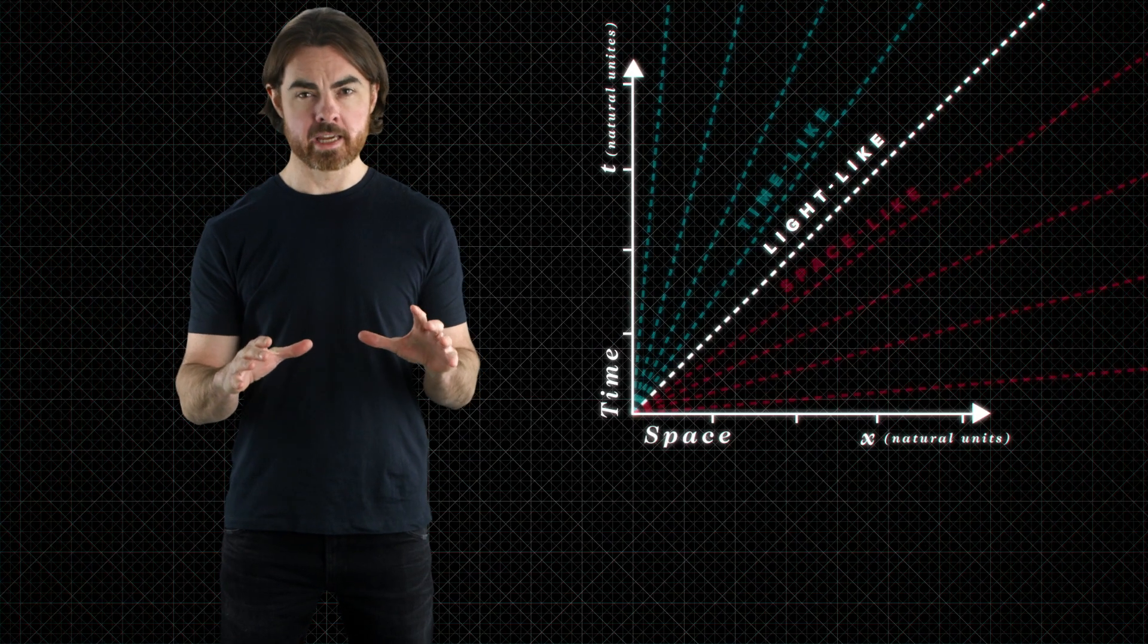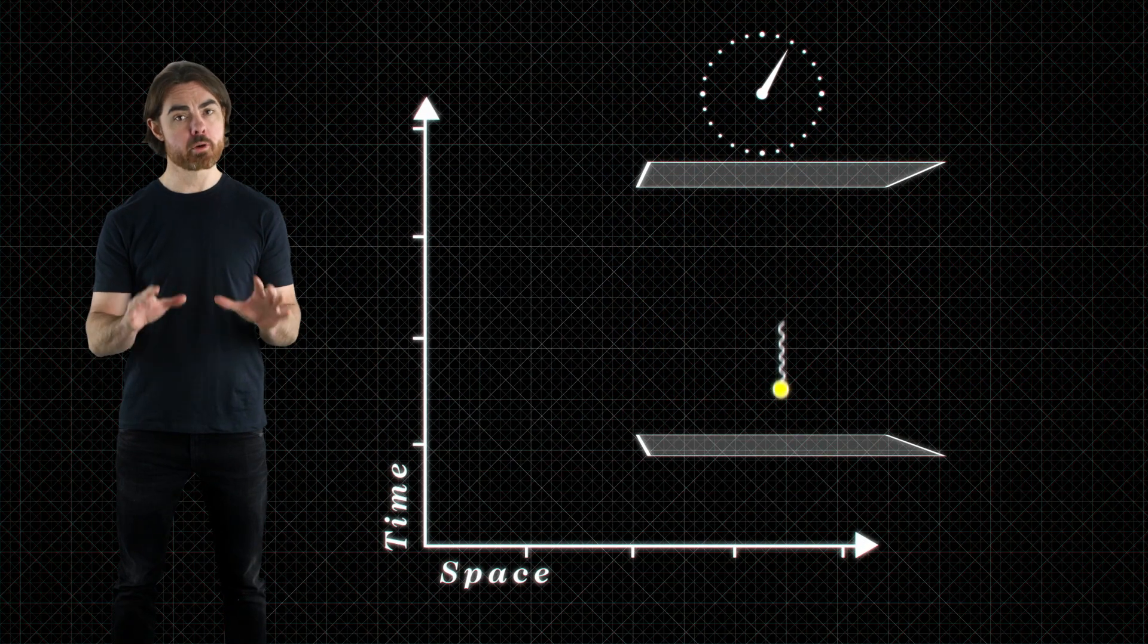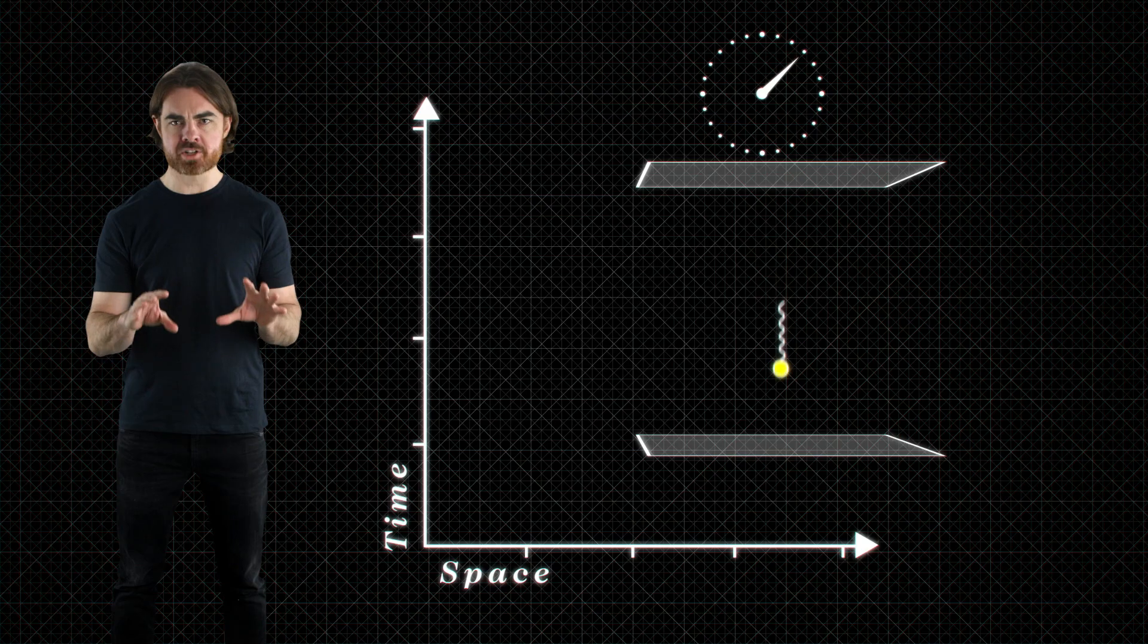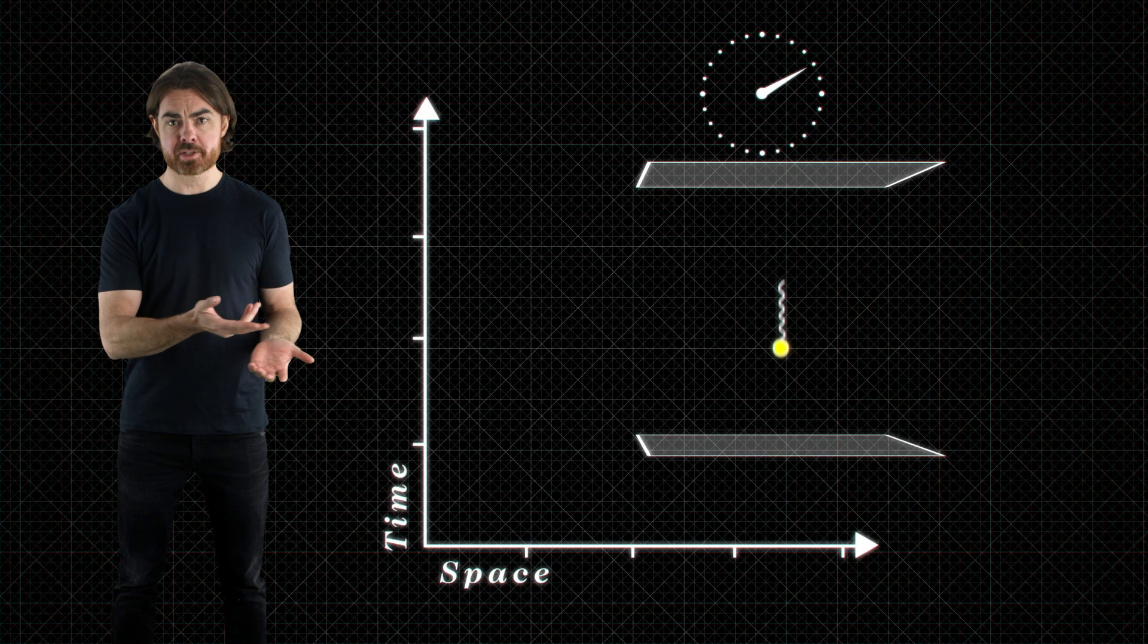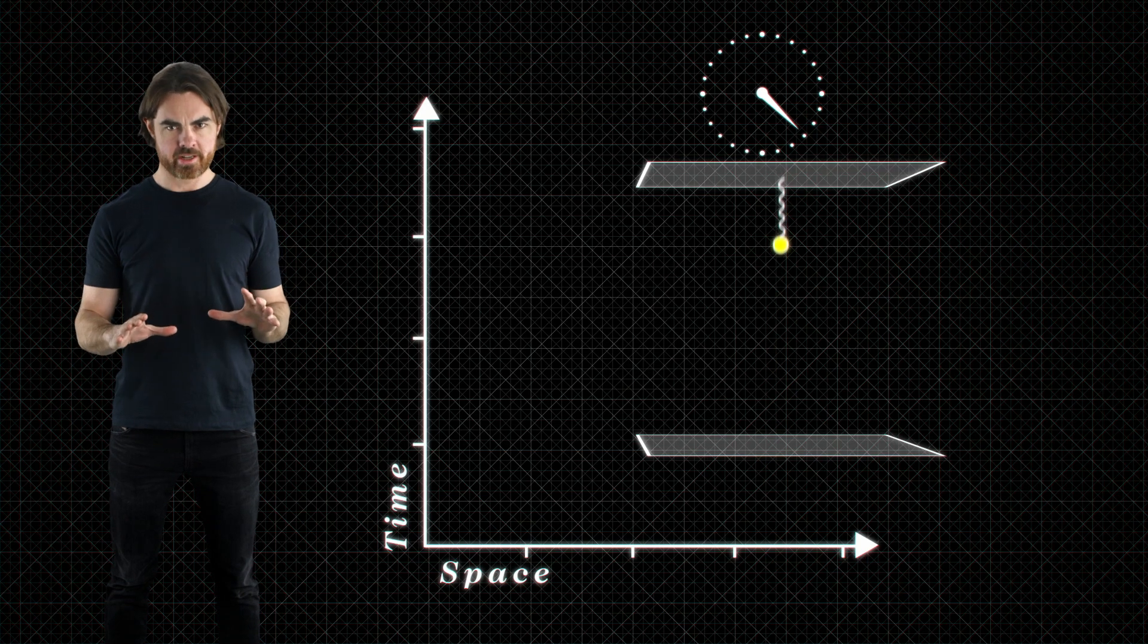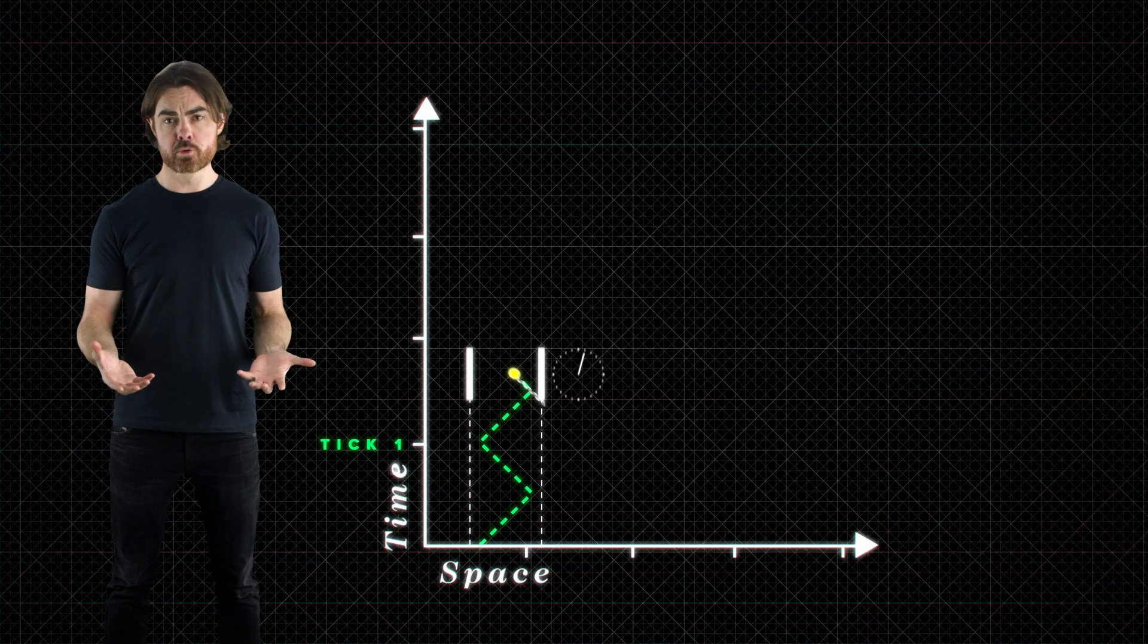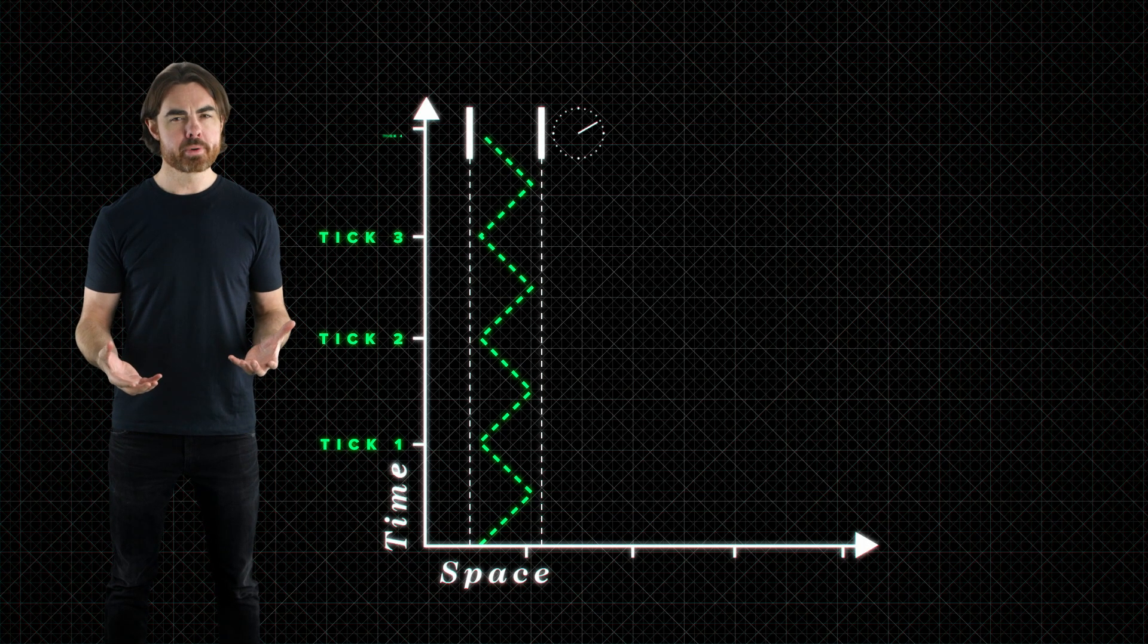But what does this look like if we replace our regular clock with a photon clock? Now remember, a photon clock marks time with a particle of light bouncing between two mirrors. Each back and forth bounce is one tick of the clock. Now, we'll get back to why this is a good measure of the flow of time in a minute. Stationary, the world line of the photon clock looks like this. The clock travels smoothly straight upward in time, but is unmoving in space.